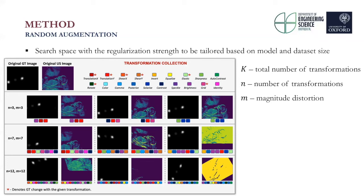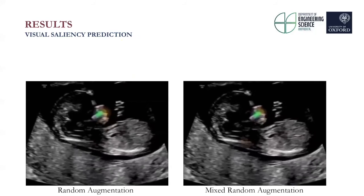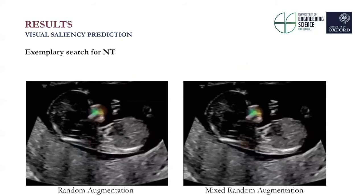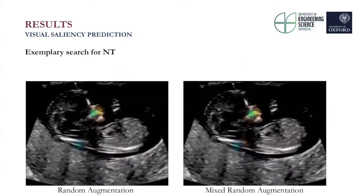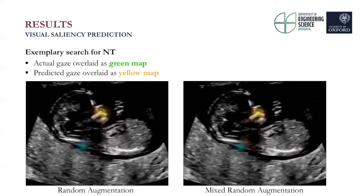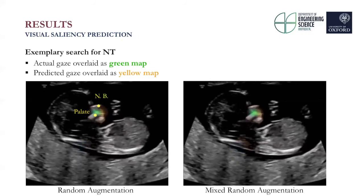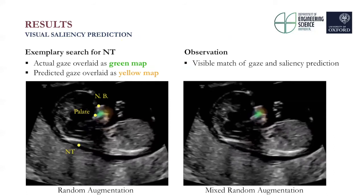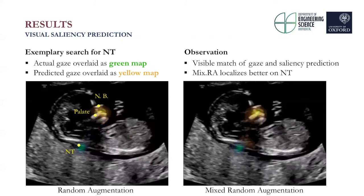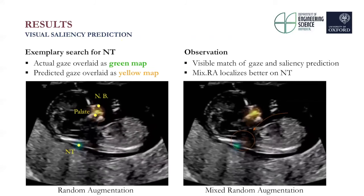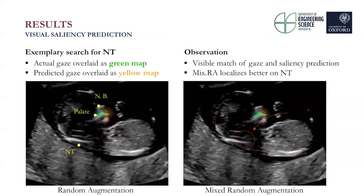Now let's look at the results and see what the output of the visual saliency predictor looks like. We show two examples of the first trimester search for nuchal translucency, as well as verification of Down syndrome around the nasal bone. Both videos are in the same timeframe, allowing comparison of random augmentation on the left against mixed random augmentation on the right. The actual sonographer gaze is overlaid as a green map, and the predicted saliency map as a yellow map. The sonographer focuses on the palate, nasal bone, and checks for nuchal translucency. Mixed random augmentation localizes better on all three structures including NT, whilst random augmentation assigns lower saliency values to NT. Importantly, both models localize the three structures well, which is important for clinical measurement.